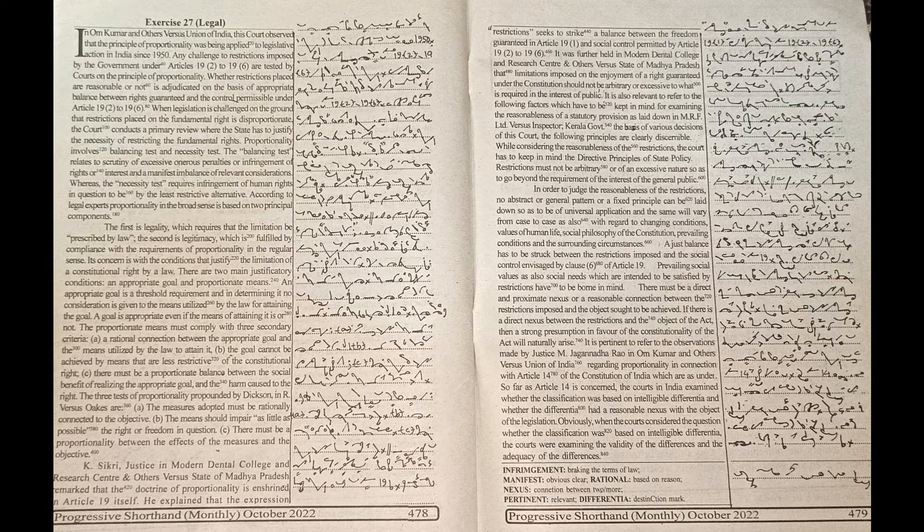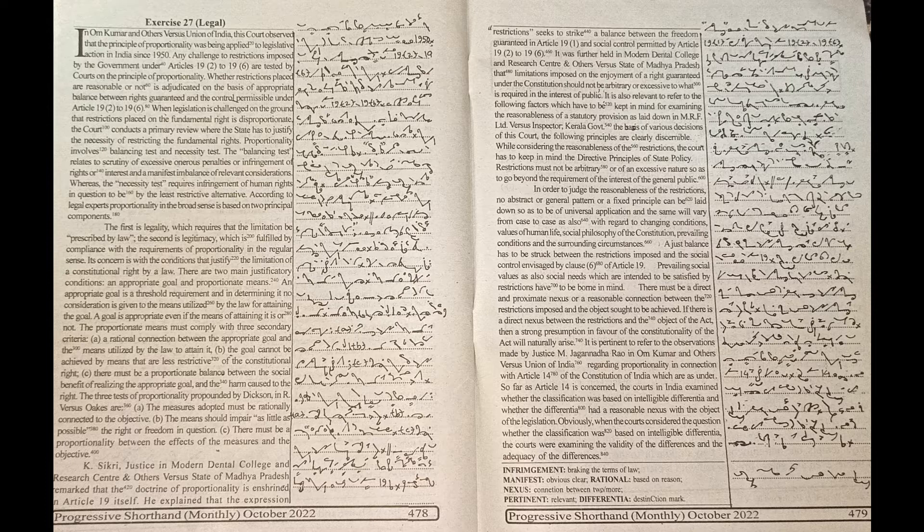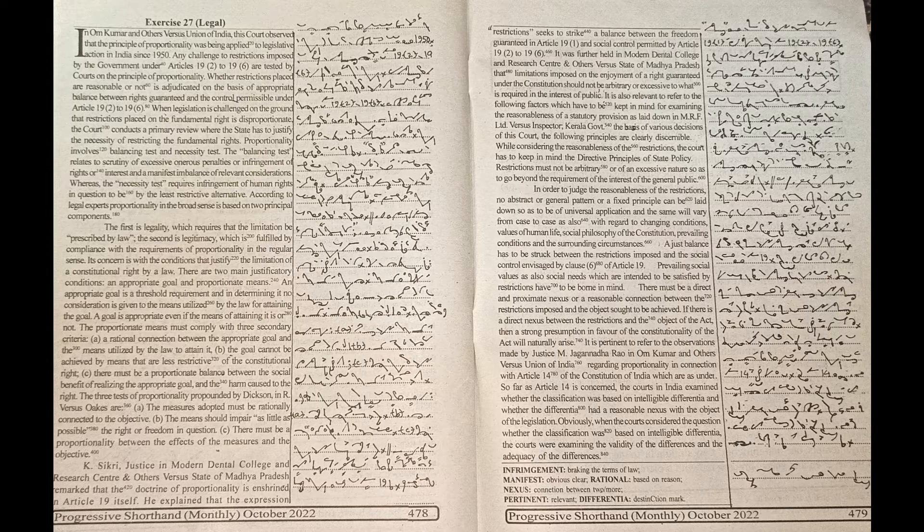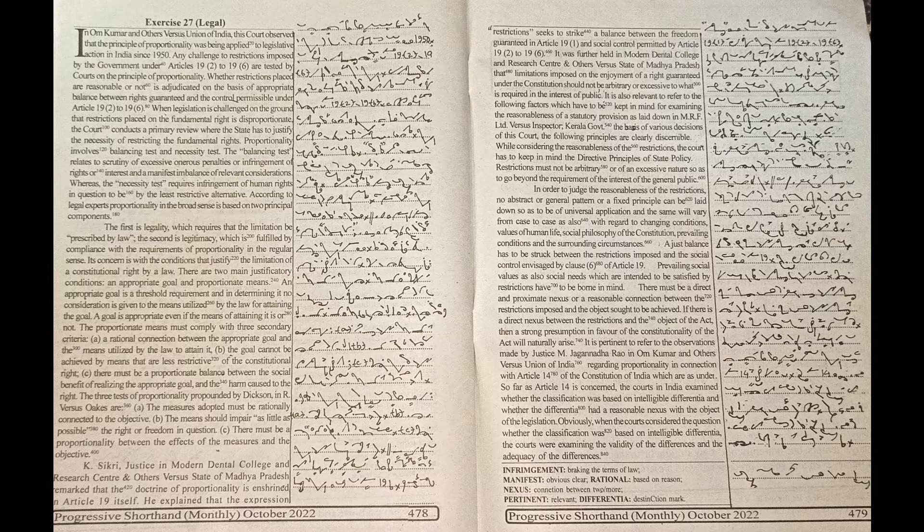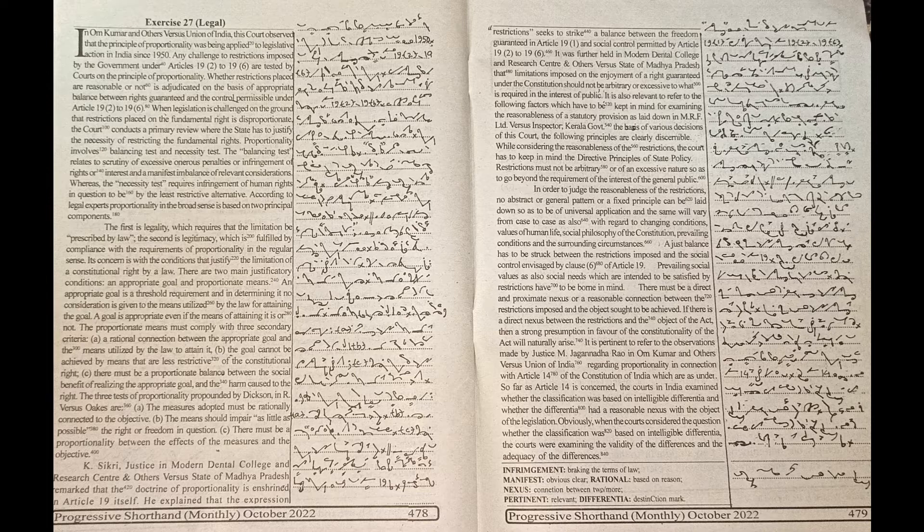In Om Kumar and Others vs. Union of India, this court observed that the principle of proportionality was being applied to legislative action in India since 1950. Any challenge to restrictions imposed by the government under Articles 19(2) to 19(6) are tested by courts on the principle of proportionality.